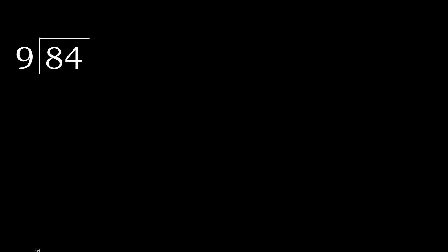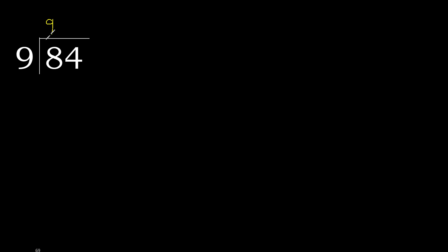84 divided by 9. 8 is less, therefore next. 84 is not less, therefore work with 84. 9 multiplied by which number is nearest to 84 but not greater? 9 multiplied by 9 is 81, which is not greater. Subtract: 84 minus 81 equals 3. There is no next number, therefore complete.